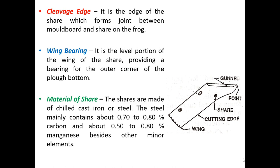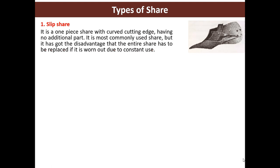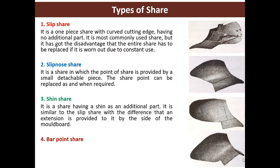The material of shear: shears are made up of chilled cast iron or steel. The steel mainly contains about 0.7 to 0.8% carbon and about 0.5 to 0.8% manganese besides other minor elements. Types of shear: slip shear, slip-no shear, shin shear, and bar point shear.